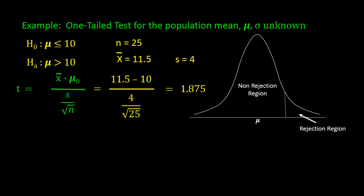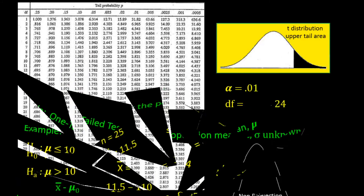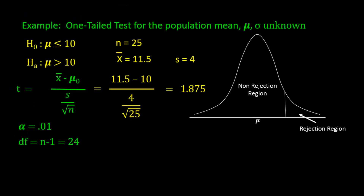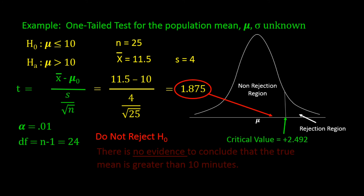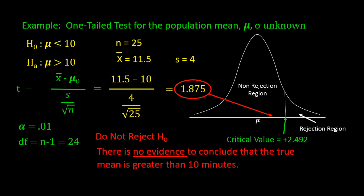Now we have to see if this value is significant, so we look up a critical value in the t-table. Let's stipulate the level of significance as 0.01. We don't split alpha in half for a one-tail test, since all of alpha will be in that one tail. The degrees of freedom are n minus 1, which is 24 degrees of freedom. Looking under 0.01 and 24 degrees of freedom, we get a critical value of 2.492. The test statistic of 1.875 falls in the non-rejection region, so we do not reject the null hypothesis and do not find evidence to conclude that the true mean is greater than 10 minutes.